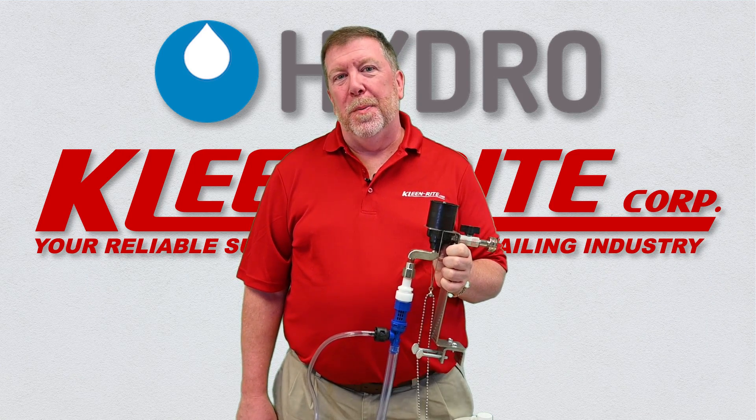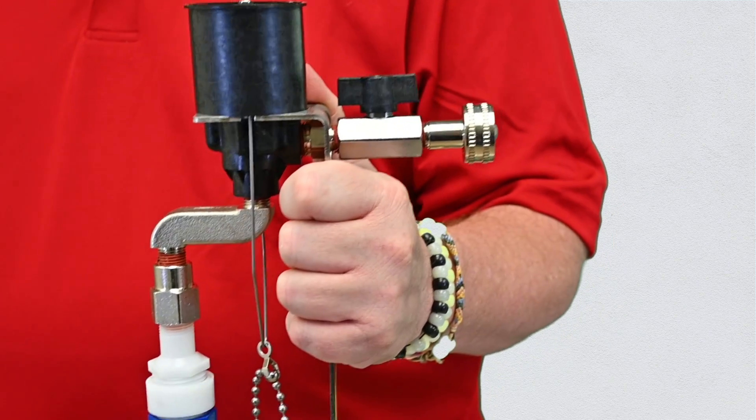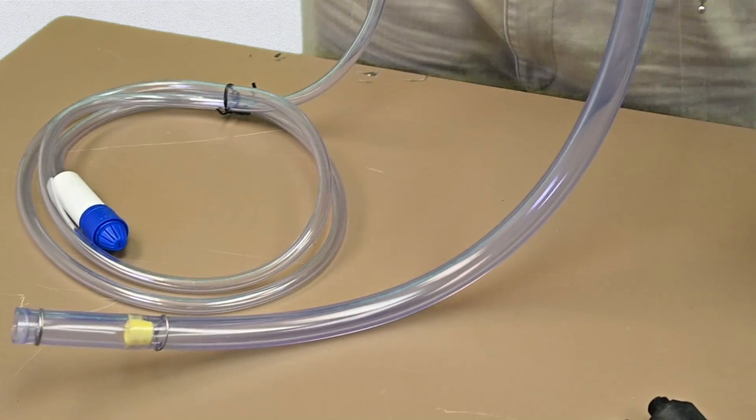One of HydroSystems' most exciting new products is the Ultra Concentrate HydroMinder. This expansion to the HydroMinder line offers dilution rates down to 2,500 to 1, allowing you to use hyper-concentrated car wash chemicals that are becoming more and more popular.